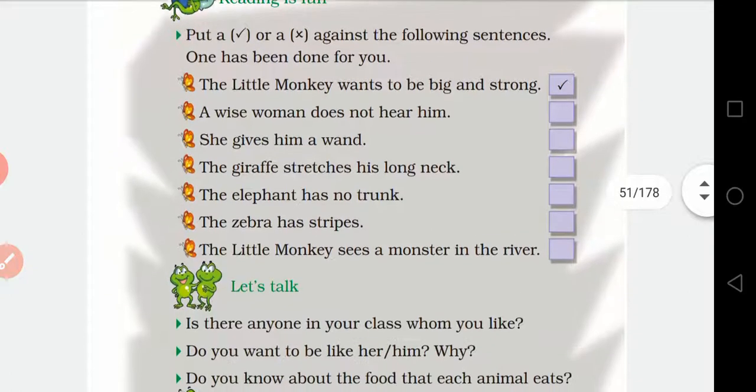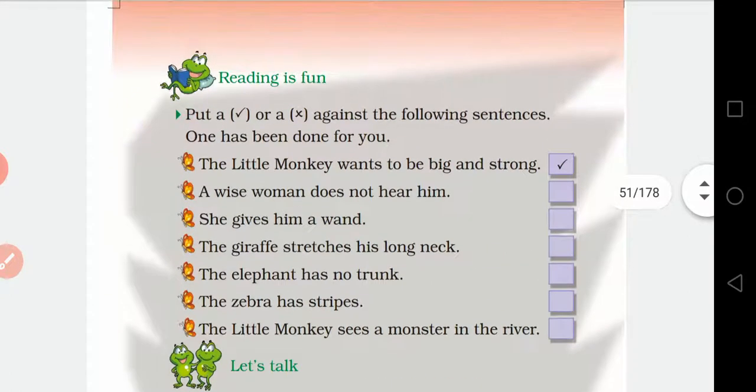Please open page number 32 and in this page, there is activity for you, reading is fun. So, let us do this. Put a tick or a cross against the following sentences. One has been done for you.